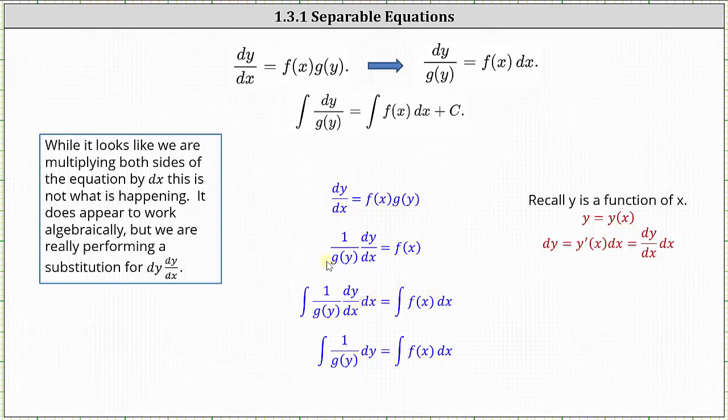In practice, it is okay to think of dividing both sides by g of y and then multiplying both sides by dx. And now let's look at an example.